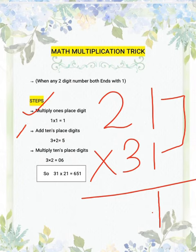And the second step is you need to add its tens place digits. 3 plus 2 gives you 5.